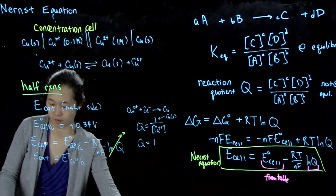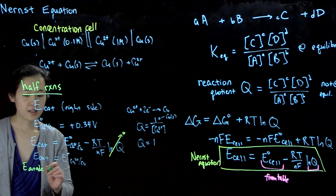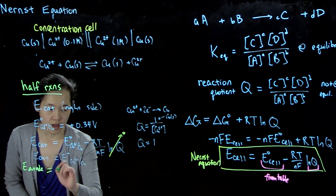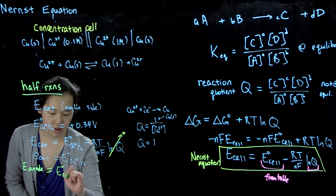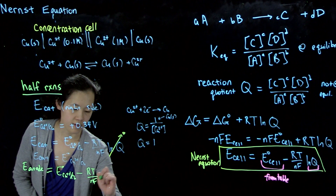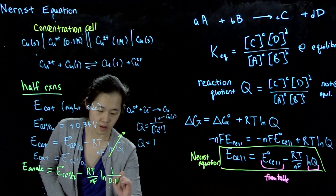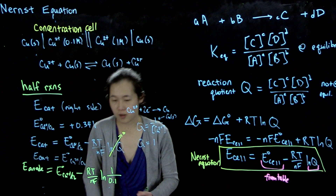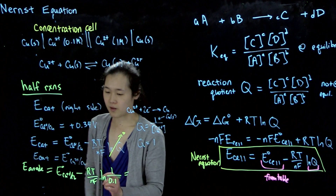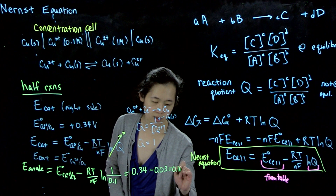Therefore E_cathode equals E°(Cu²⁺/Cu), because the log of 1 is zero, so that term drops out. For the anode — using the same half reaction — E_anode equals E°(Cu²⁺/Cu) minus RT over NF times natural log of Q, where Q equals 1 over 0.1 molar. This works out to 0.34 minus 0.03, which equals 0.31 volts, using N equals 2 and substituting in the constants.